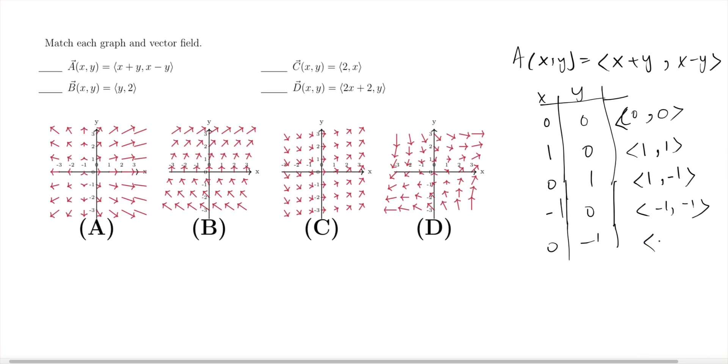At point (0,0) I should have basically nothing going on. At point (1,0) I should have (1,1) which looks like this. At point (0,1) I should have a little vector looking like that.